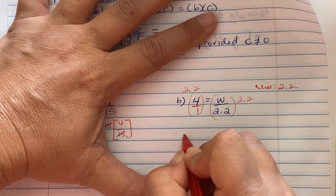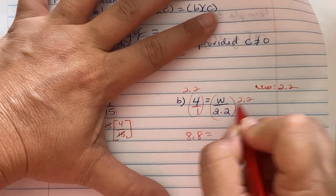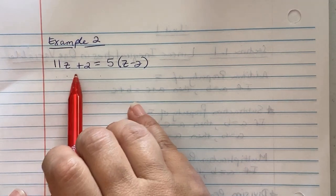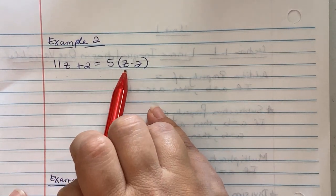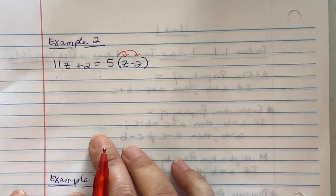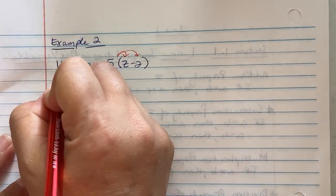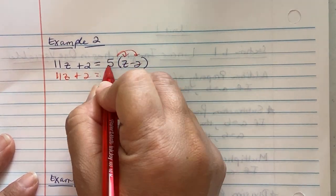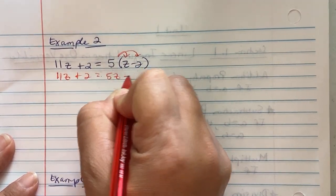I'm multiplying both sides by 2.2, so 2.2 times 4 is 8.8. The right side cancels, and so w equals 8.8. Example two: it says 11z plus 2 is equal to 5 parentheses z minus 2. Remember, you're going to distribute into the parentheses.